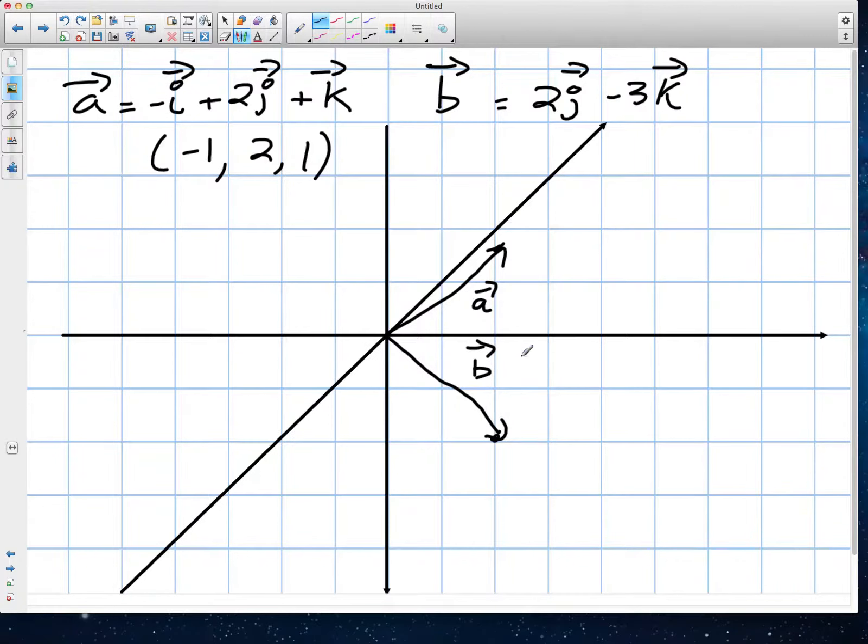And finally, they've given us vector c. Vector c is i minus 3j plus 2k. So i over 1 minus 3, we go back and up 2. Something like that. So this is vector c.